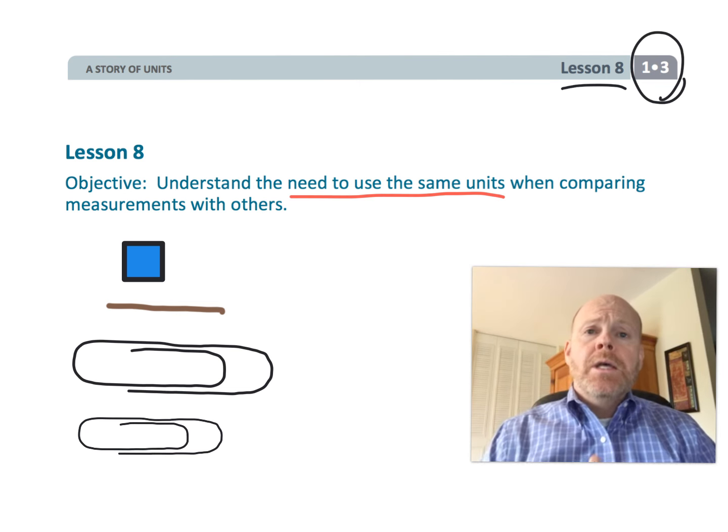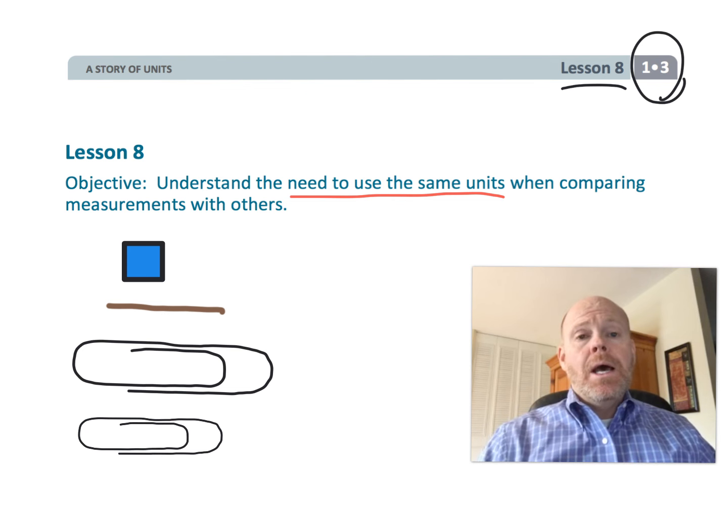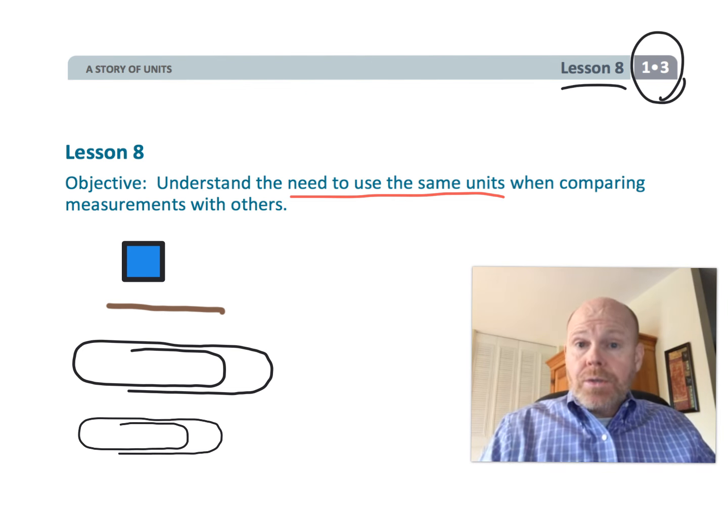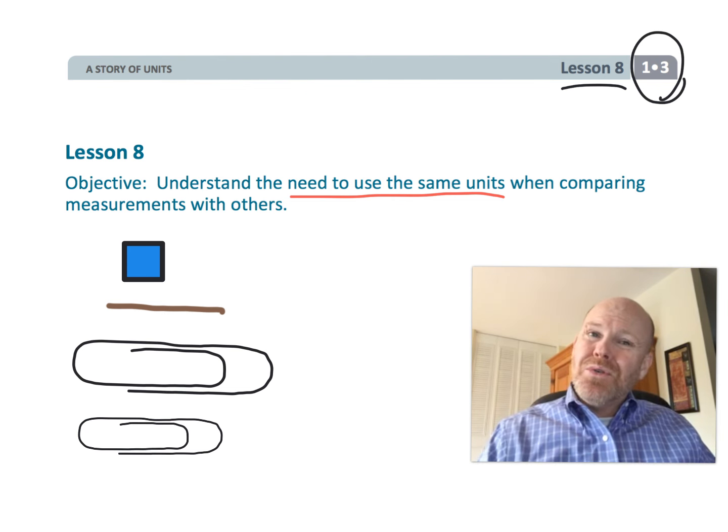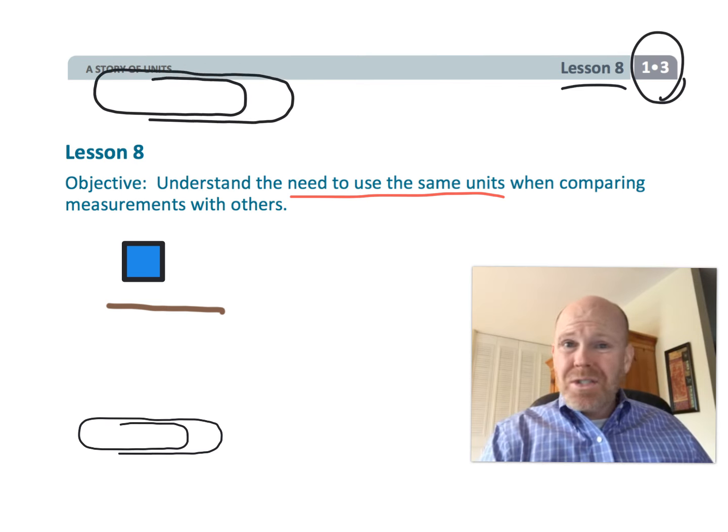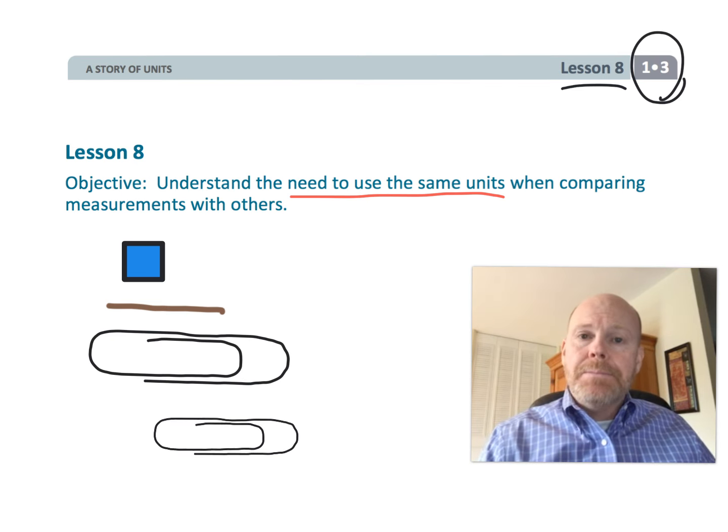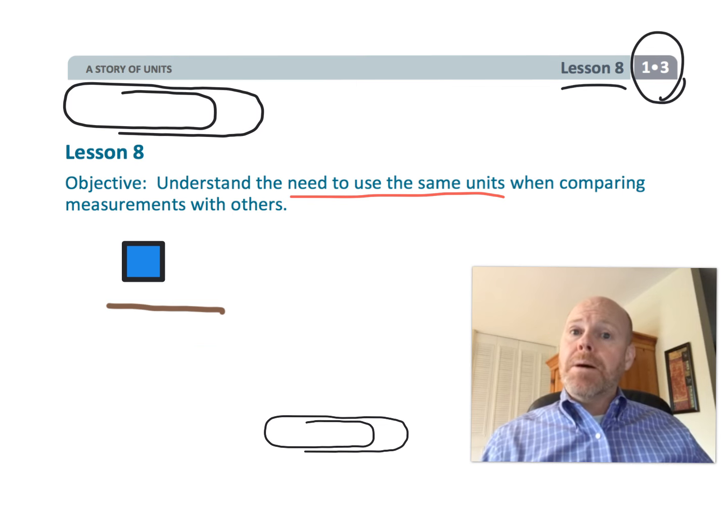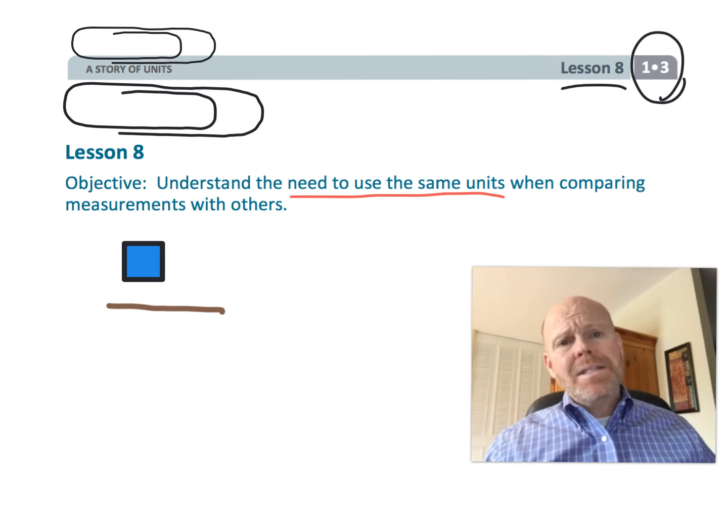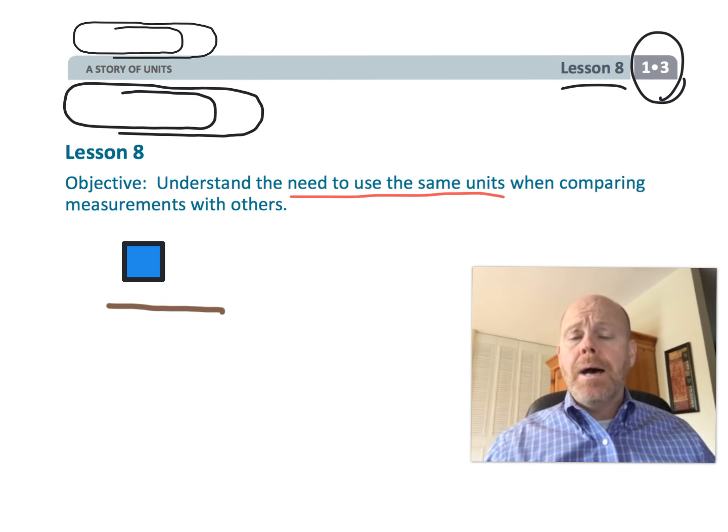For example, students could be measuring the same object, but one student might be using large paper clips, another student might be using small paper clips, and even though they're measuring the same object they're going to come up with different answers and that makes it difficult for us to compare measurements.